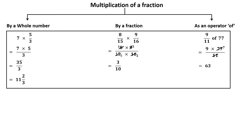The next topic is multiplication of a fraction — by a whole number, by a fraction, and as an operator of. When two fractions are multiplied, we multiply their numerators and denominators separately, writing the product as product of numerators upon product of denominators. For multiplication of a fraction by a whole number: 7 multiplied by 5 upon 3 equals 35 upon 3, which is 11 integer 2 upon 3.